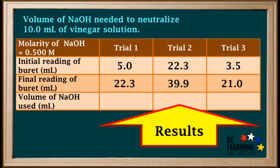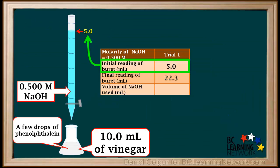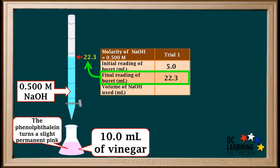Here is a table showing the results of this titration. The initial reading of the burette is the level of the NaOH in the burette before the titration is performed. In Trial 1, the NaOH starts out at the 5 milliliter mark. The final reading of the burette is the level of the NaOH when the equivalence point of the titration is reached. In Trial 1, this is the point at which the NaOH solution reaches the 22.3 milliliter mark.